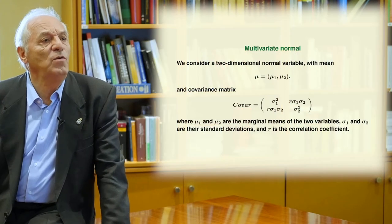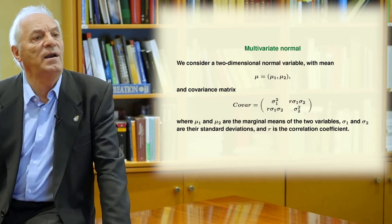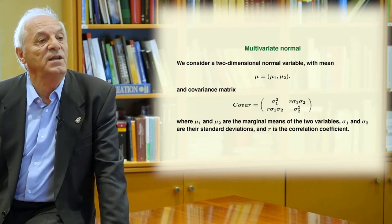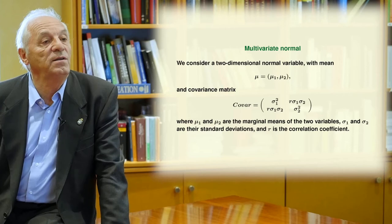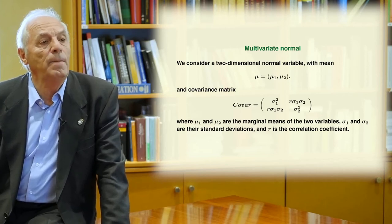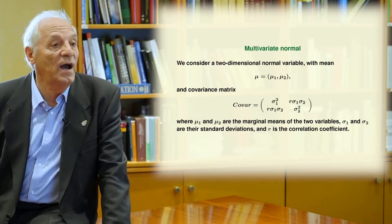This is the model we use for this example. We consider a two-dimensional normal random variable. We have means mu1 and mu2, and the covariance matrix is written there, where the diagonal is written in terms of the variances and the other terms are written in terms of the rho coefficient or the r coefficient.